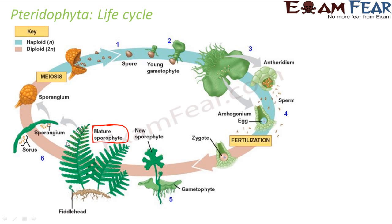These leaf-like appendages are the sporophylls, and enclosed within the sporophylls are small structures called sporangia. This is the magnified image of a sporangium — inside it are the spores. These spores are released and will germinate to form the gametophyte.